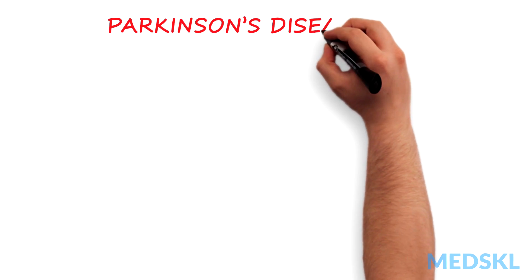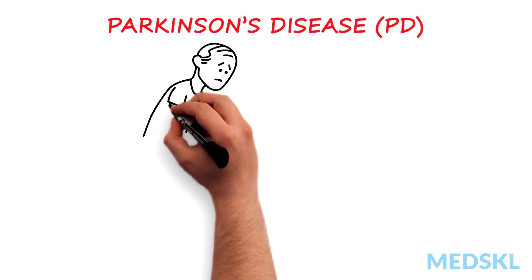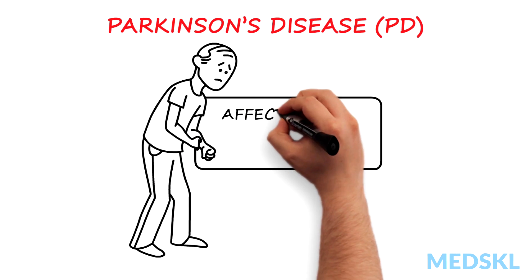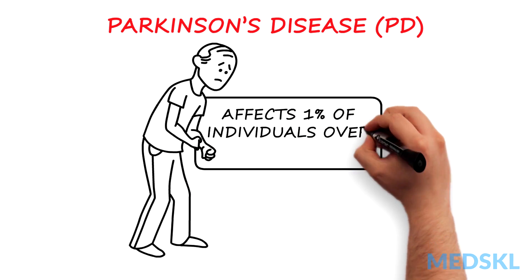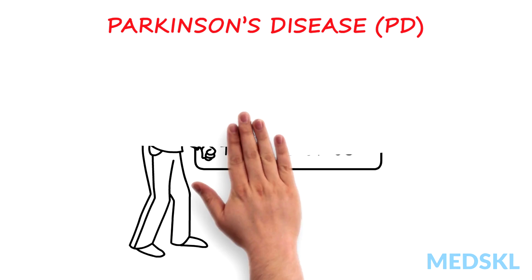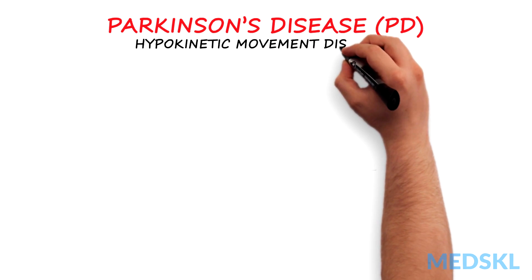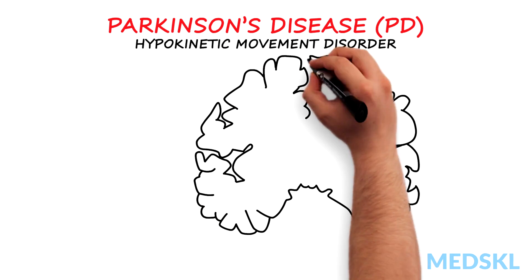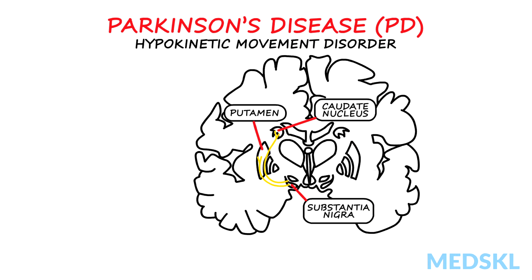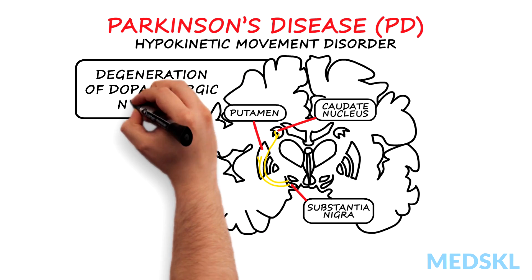Parkinson's disease, or PD, is the second most common neurodegenerative disorder after Alzheimer's disease and affects 1% of individuals over the age of 65. It is classified as a hypokinetic movement disorder and occurs due to degeneration of dopaminergic neurons that project from the substantia nigra in the midbrain to the basal ganglia.